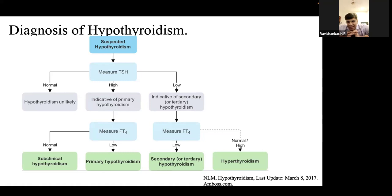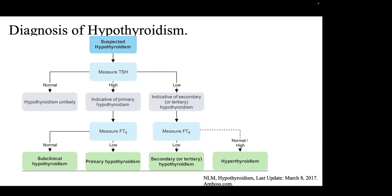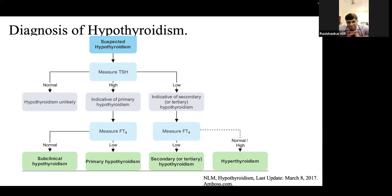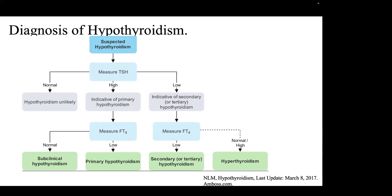Regarding secondary and tertiary hypothyroidism: secondary is caused by pituitary causes like pituitary adenoma leading to low TSH levels. Tertiary involves hypothalamic disorders causing low TRH, which leads to low TSH and further low T3/T4. In tertiary hypothyroidism, all levels — TRH, TSH, T3, and T4 — will be low.